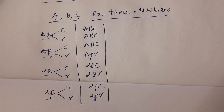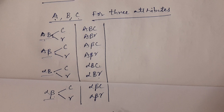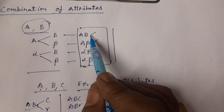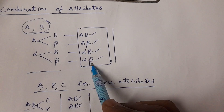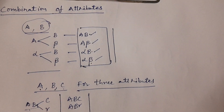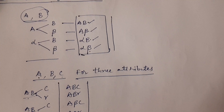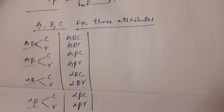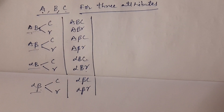Second-order combination of attributes: we know for A and B we have 4 combinations. Similarly for B and C, 4; and for A and C, again 4. That gives 12 combinations of attributes for 3 attributes in order 2.